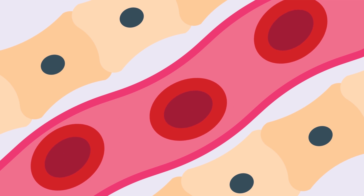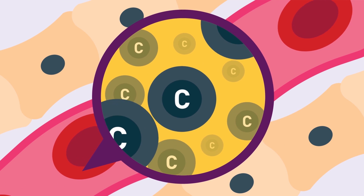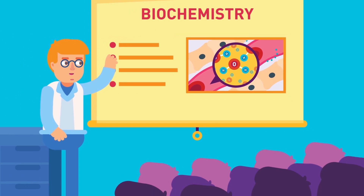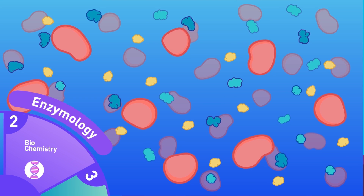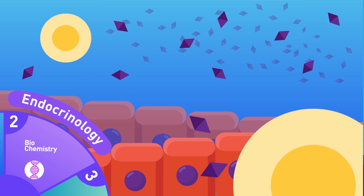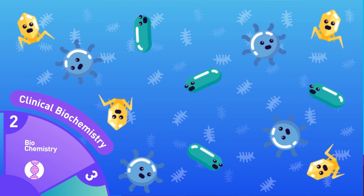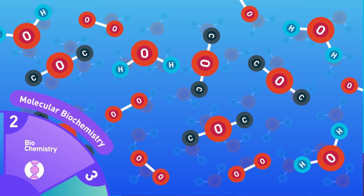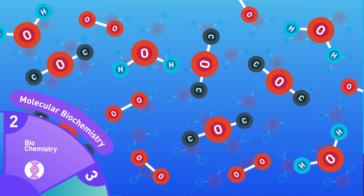Everything in the body is made up of atoms and molecules of different chemical compounds, like carbon, oxygen and hydrogen. This is what we study in biochemistry. Biochemistry can further be divided into interesting disciplines, like Enzymology, which is the study of enzymes; Endocrinology, which is the study of hormones; Clinical biochemistry, which is the study of diseases; and Molecular biochemistry, which is the study of biomolecules and their functions.